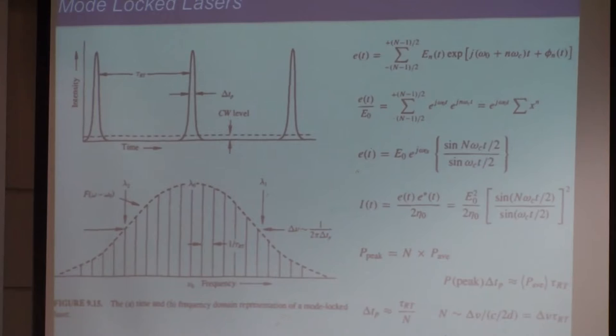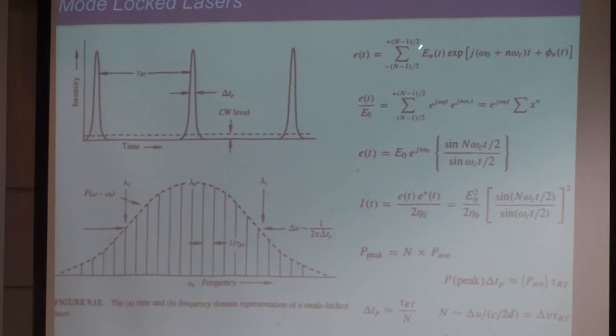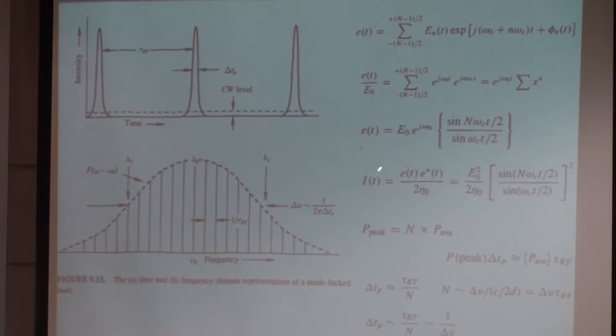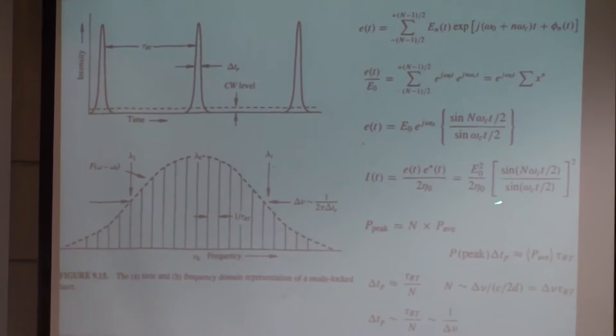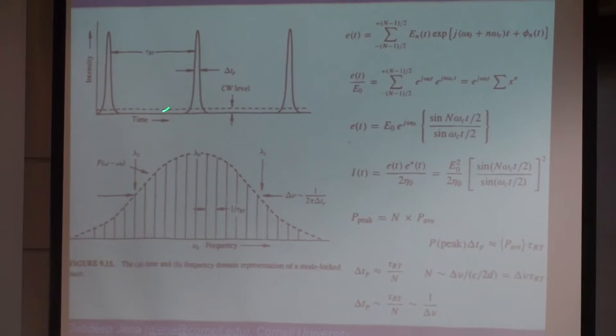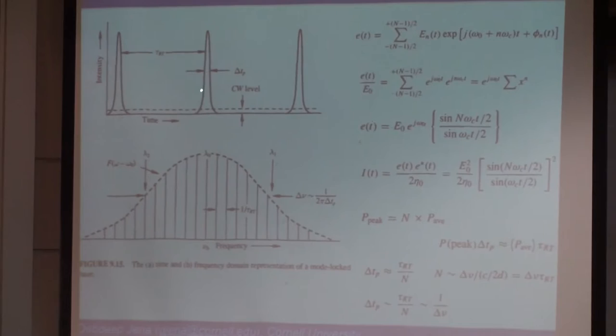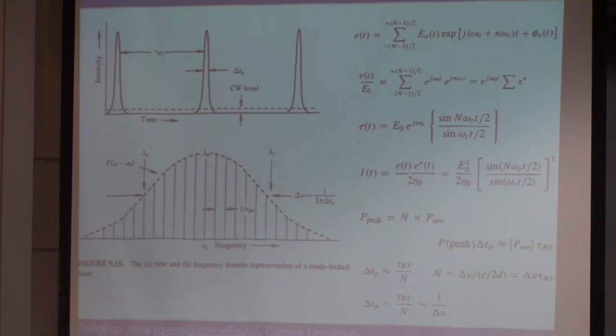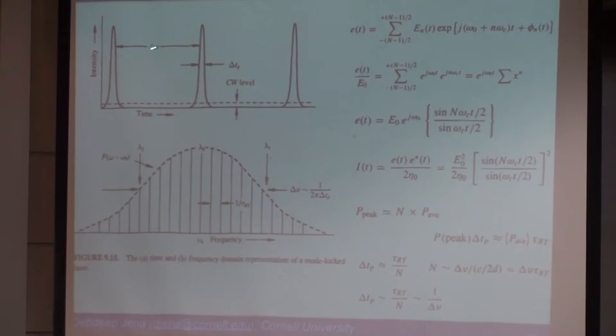When you add up these functions, assuming all electric field amplitudes are the same E₀, you can sum exactly to get a sinc function. The intensity is the sinc-squared function. The separation between pulses is the round trip time, and the pulse width is the round trip time divided by the number of modes locked. So if you have 10 modes and round trip is 1 nanosecond, you get roughly 100 picoseconds.